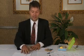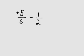I want to showcase one of the examples we just talked about of how to combine the explicit systematic instruction with that CRA visual representation. To do that, I've got an example problem: positive five-sixths minus one-half.